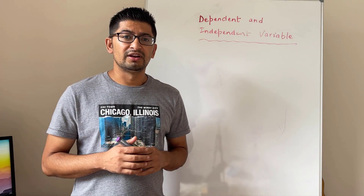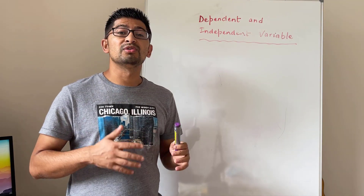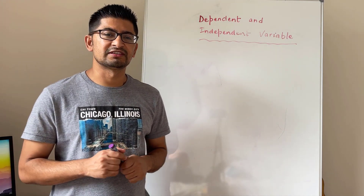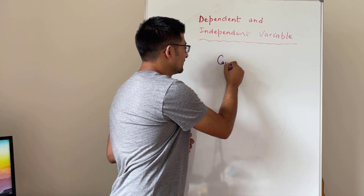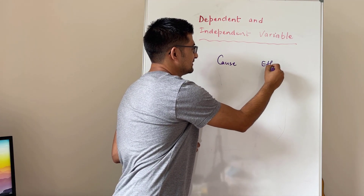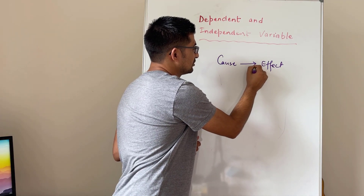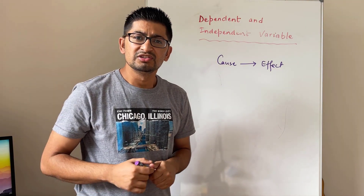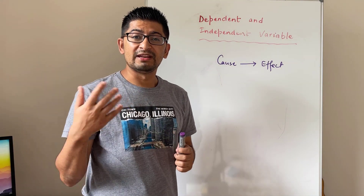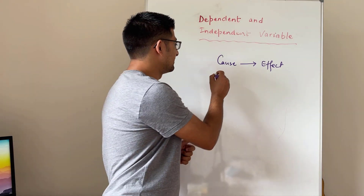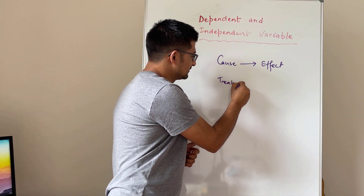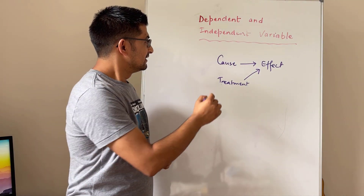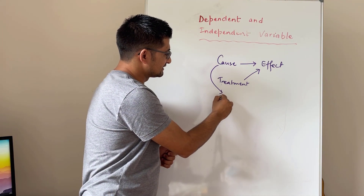Before knowing what they actually mean, you need to know how research works. Whenever you do a research study, the flow of research will be something like cause and effect. It starts with the cause and it ends with the effect. You change something — you manipulate something in your study, which you call a treatment — and then you see the effect of that treatment. That cause can be termed as an independent variable.